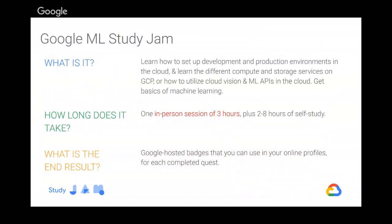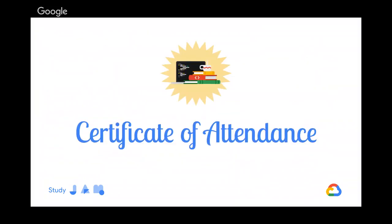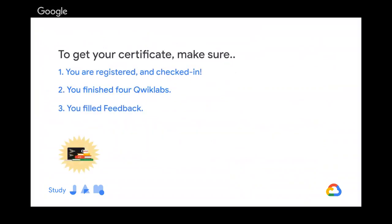In this Study Jam, we will learn how to set up a development and production environment in the cloud using Google Cloud Platform, and how to use TensorFlow and machine learning APIs. The session will take three hours online, followed by two to eight hours of QuickLabs. You will get badges from QuickLabs when you finish the quests and a certificate of attendance from Google. To get the certificate, you must be registered and checked in, finish four QuickLabs, and fill the feedback form. Finishing the four QuickLabs also gives you one month free access to the TensorFlow on Google Cloud Platform Coursera specialization.